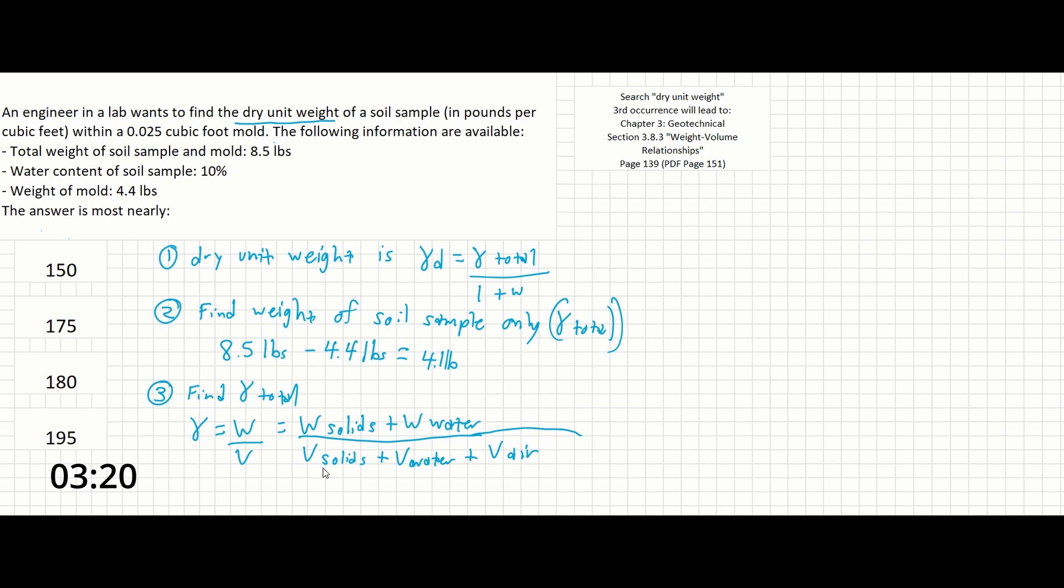There is no specific equation in the manual that's written out like this in this chapter, but if you look at the image provided on page 139 of the reference manual, showing the weight volume relationships, you can see that this is what the total gamma consists of.